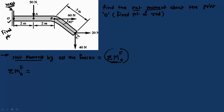Starting from the left: the first force is 50N. Moment by 50N about point O = 50 × 2m = 100 N·m. The 50N force tries to rotate in the clockwise direction, so it is negative: −100 N·m.